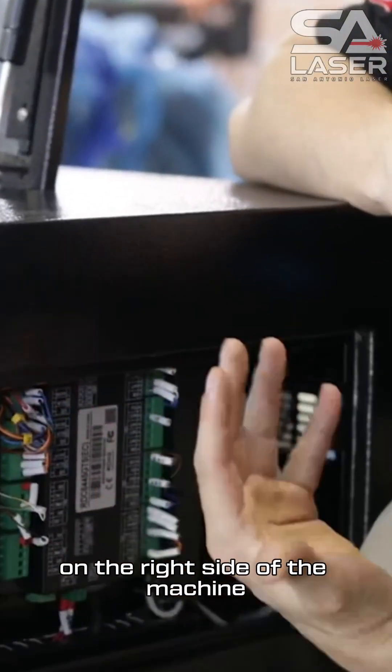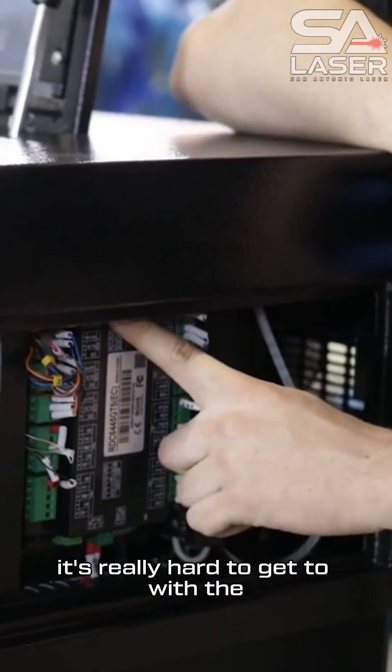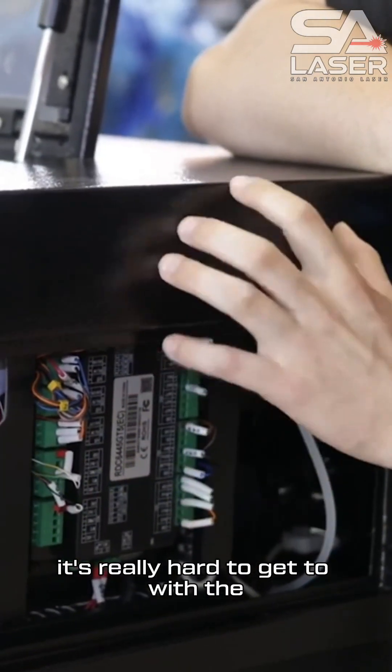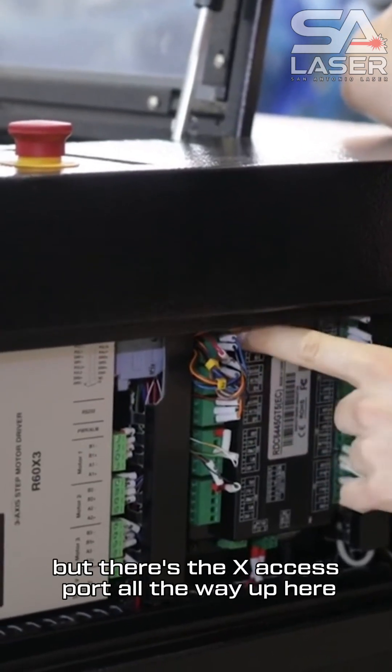the controller card on the right side of the machine. Take off this panel up top - it's really hard to get to with the casing on, but there's the x-axis port all the way up here.